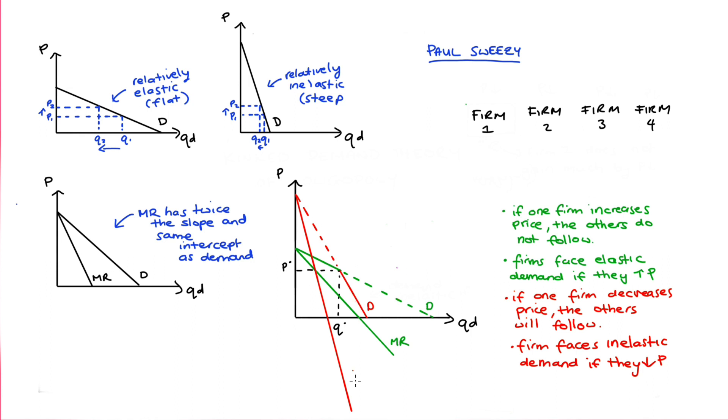So what does the marginal revenue for our firm look like that faces this kinked demand curve? For quantities up to Q star, the marginal revenue curve will be here, where our demand is elastic. For quantities after Q star, the marginal revenue curve is actually down here, where our demand is more inelastic. What we get is a discontinuous section here of our marginal revenue curve at Q star. And what this actually means is that there are a range of marginal cost curves. The marginal cost curves could be many different levels, but the profit maximizing choice would still be P star and Q star for all of those different marginal costs. I should have drawn more space to show more clearly how much variation we could have in the marginal cost curves here.